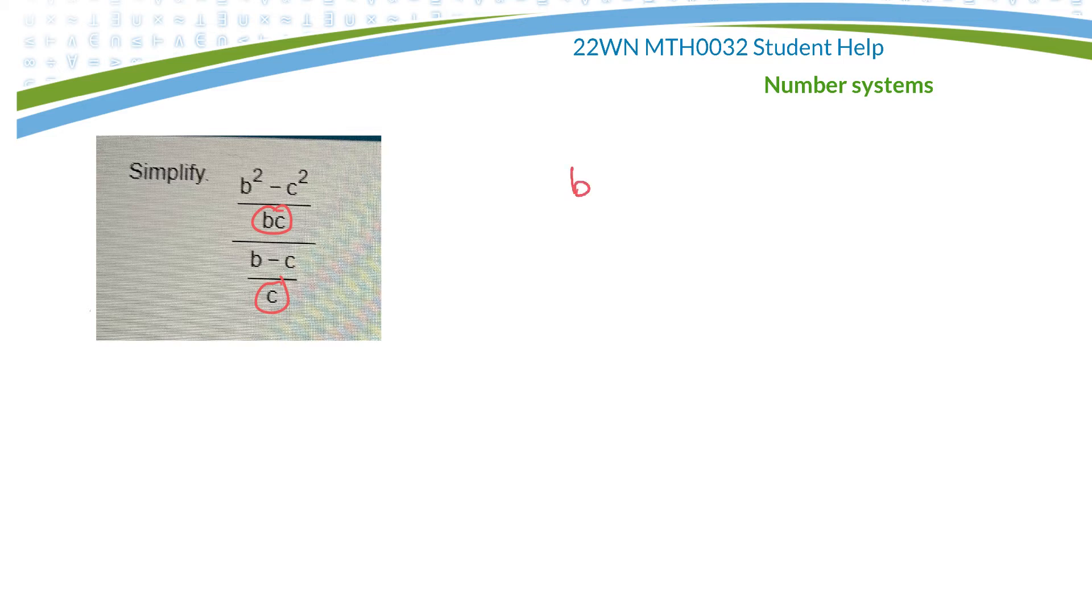So then I'm going to take each term, b squared minus c squared over bc, and b minus c over c, and I'll multiply each of those by bc. That's the lowest common denominator, bc.